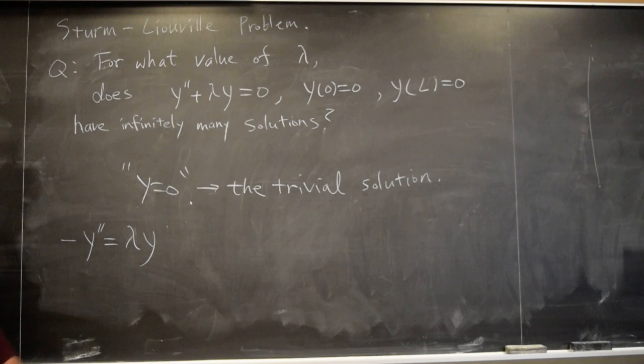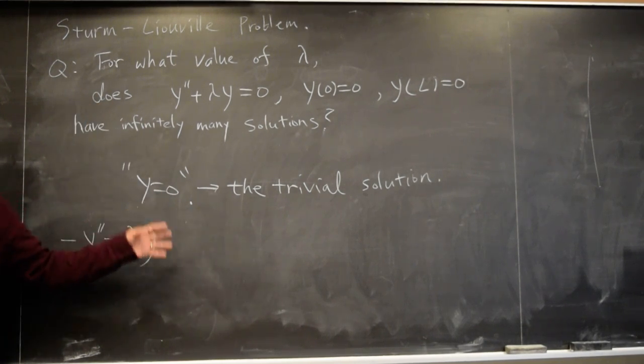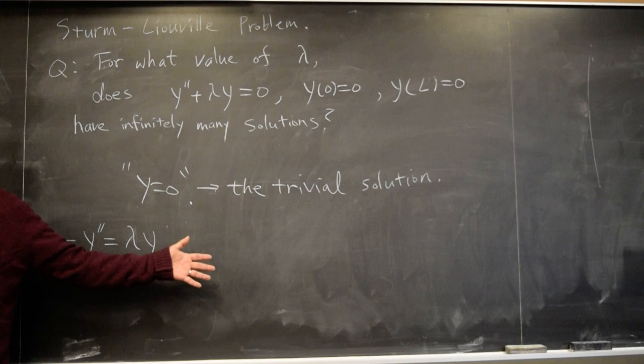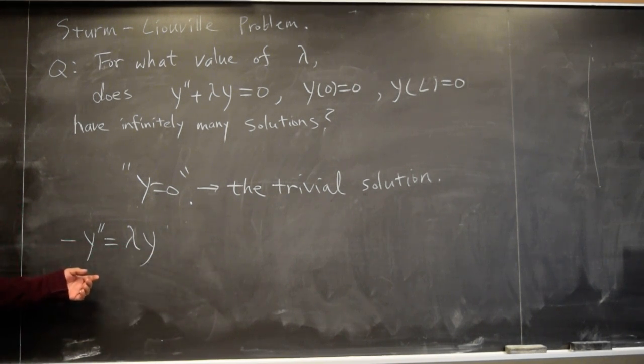And that's how people write. And because this is the second order, if it has infinitely many solutions, it will be just like our previous one. It will be some multiple of a sine or a cosine, whatever. Okay? And so the solution of this will be some sine function or cosine function, if there is infinitely many.